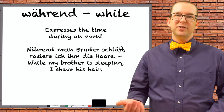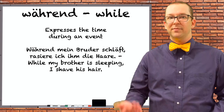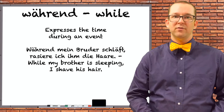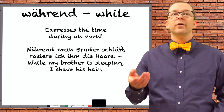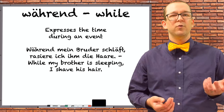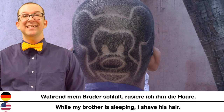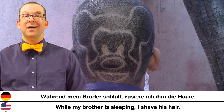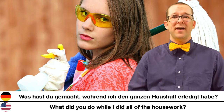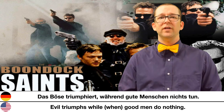When you want to use 'while' in the traditional sense, you need während. This also doubles as a genitive preposition. If a noun is attached to während, it's a preposition; if you have an entire clause with a verb at the end, it's a conjunction. Examples: 'Während mein Bruder schläft, rasiere ich ihm die Haare.' — While my brother is sleeping, I shave his hair. 'Was hast du gemacht, während ich den ganzen Haushalt erledigt habe?' — What did you do while I did all of the housework? 'Das Böse triumphiert, während gute Menschen nichts tun.' — Evil triumphs when good men do nothing.